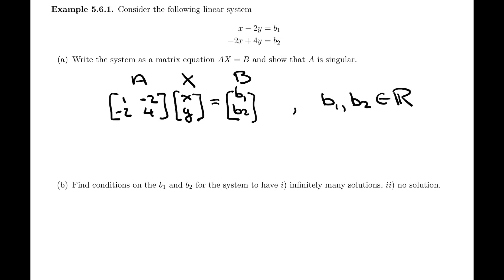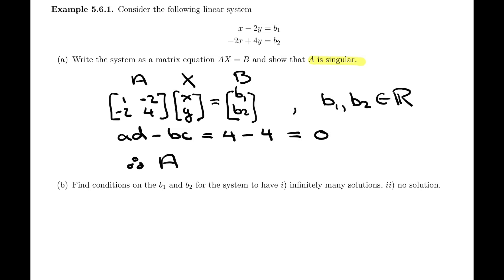We're asked to show that A is singular. We know how to do that: compute the determinant AD minus BC. That equals 1 times 4 minus negative 2 times negative 2, which is also 4. So 4 minus 4 equals 0, and that is enough for us to state that A is singular — not invertible. That's part A.